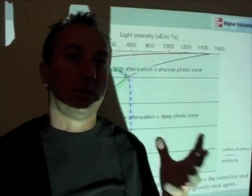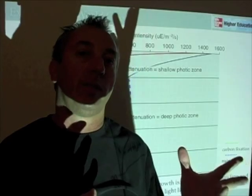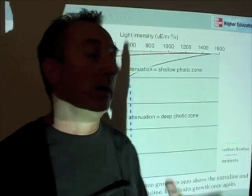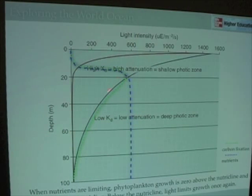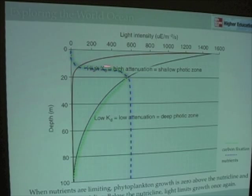So we go between two different situations: one where light intensity controls the growth rate of phytoplankton, and one where nutrients control the growth rate of the phytoplankton. And where these nutrients change — where these nutrients increase rapidly in concentration — we call that the nutricline. Or in this case, because we were talking about nitrate, it would be called the nitricline.